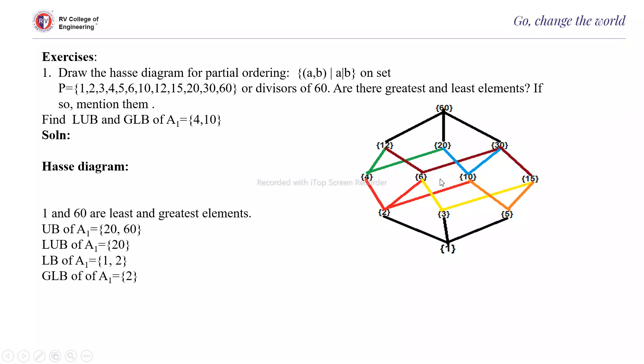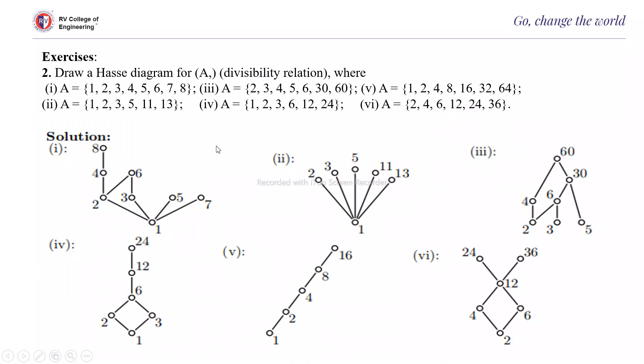Then lower bound of 4 and 10 is 2 and 1. And among that, 2 is the greatest lower bound. So 1 and 2, 2 is the greatest lower bound.